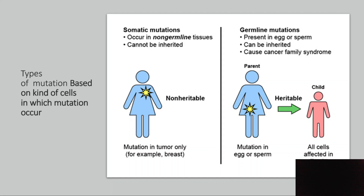Germ line mutations can be transferred to the next generation. We have a well-known case about endosulfan — a sprayed pesticide — which had a lot of adverse effects on subsequent generations.